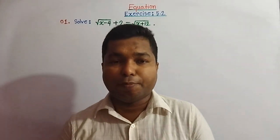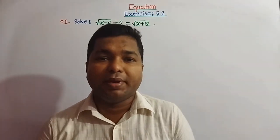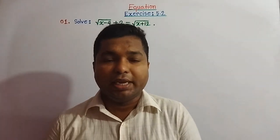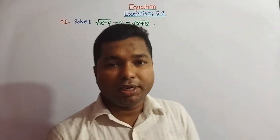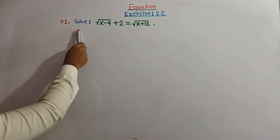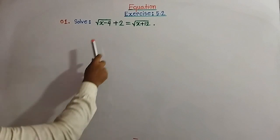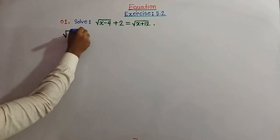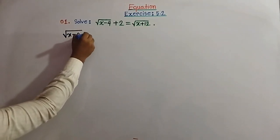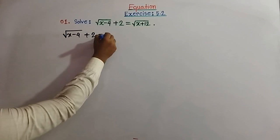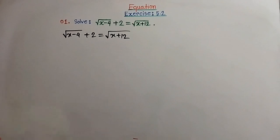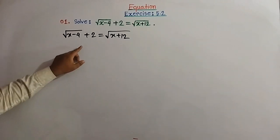Exercise 5.2 is related to equations involving radicals. Today we solve some equations involving radicals. Our first question — question number one — solve: square root of (x minus 4) plus 2 equal to square root of (x plus 12). Here the given equation is square root of (x minus 4) plus 2 equal to square root of (x plus 12), and we have to find the value of x.